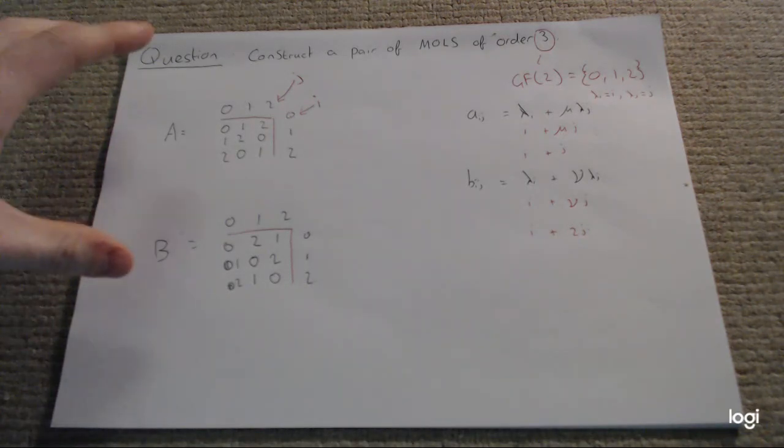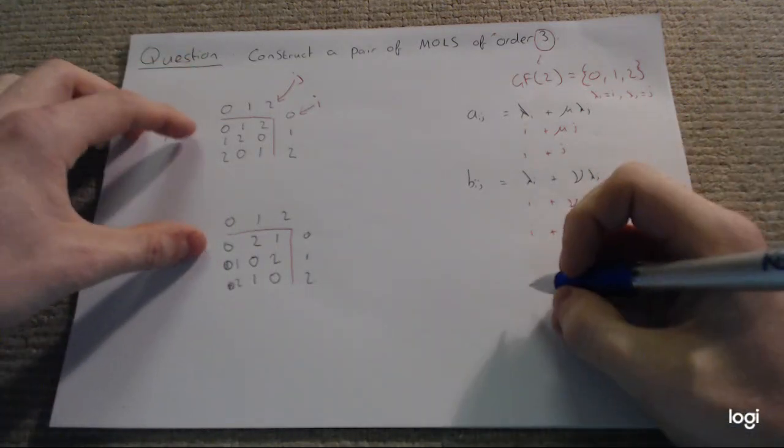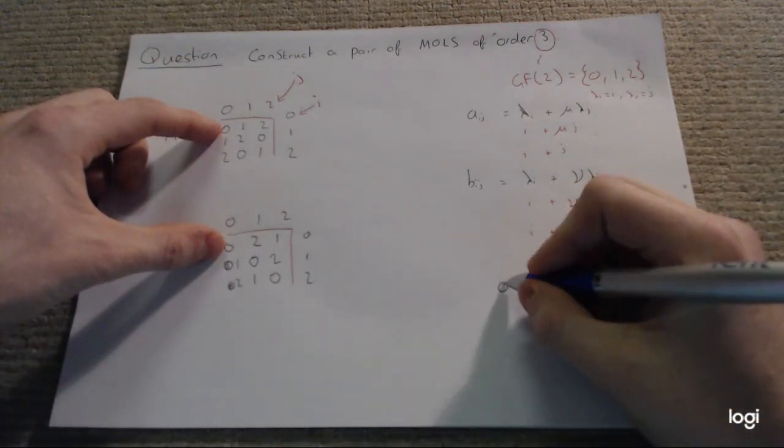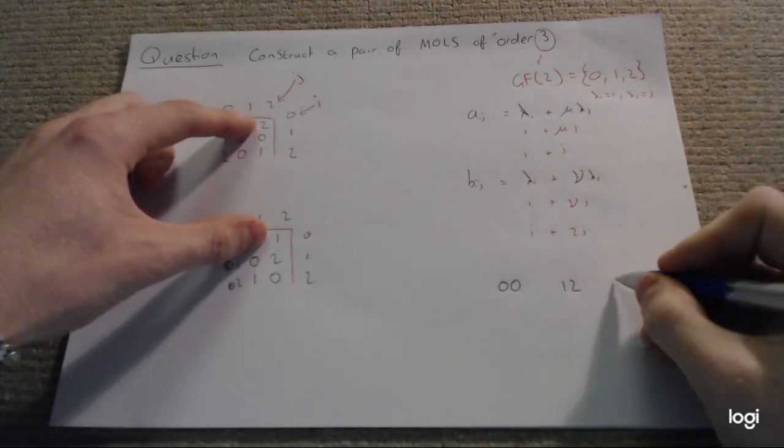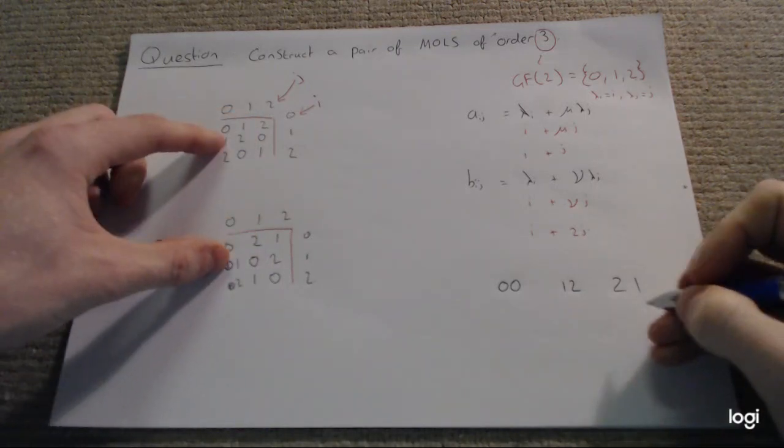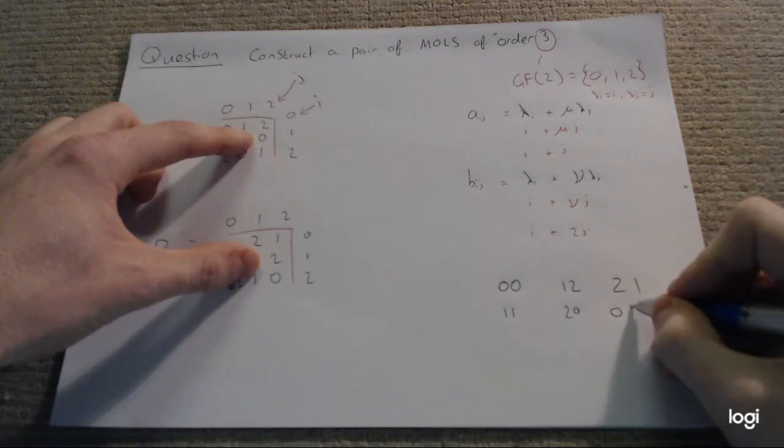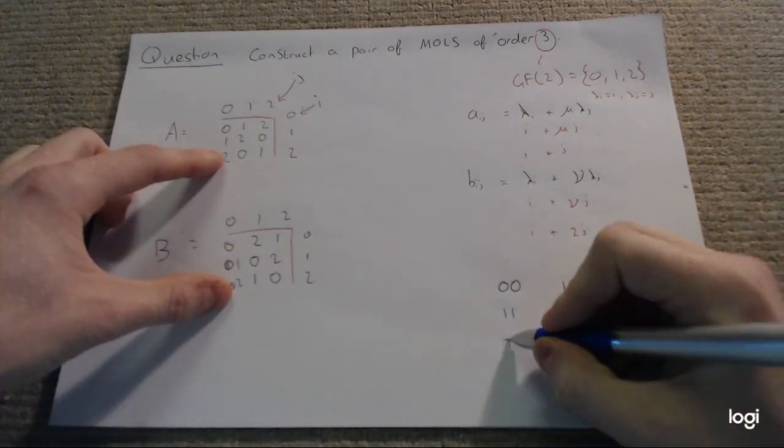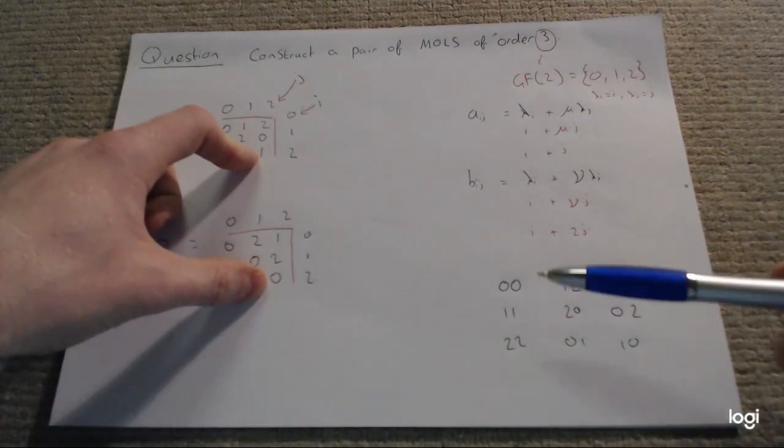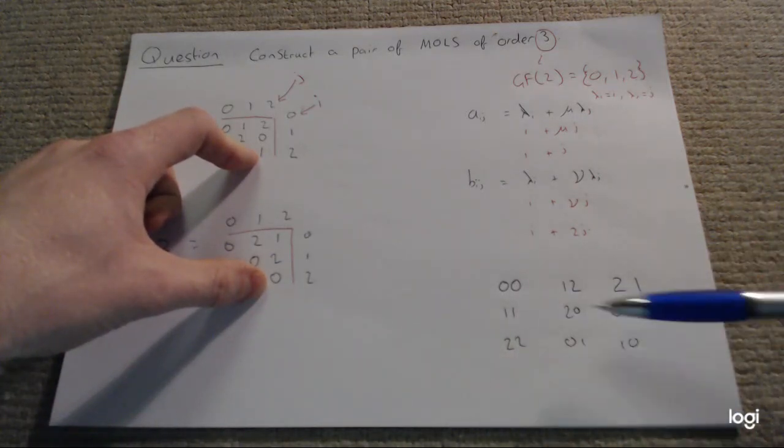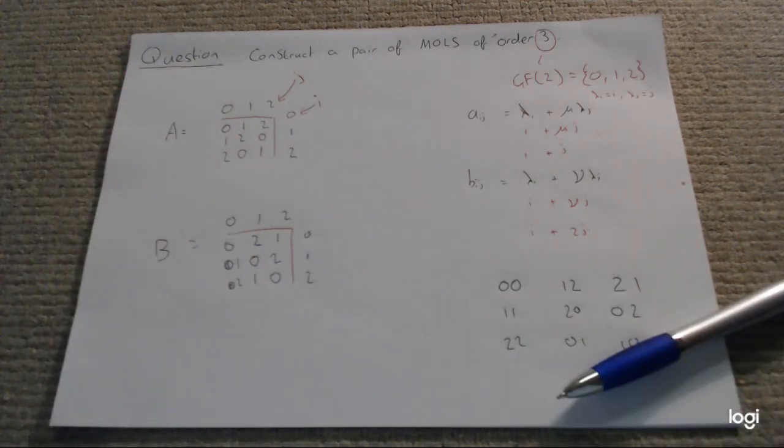Just to show that they are mutually orthogonal, we can superimpose these on top of each other. I'm going to get two 0s which I'll just call 0,0. Then 1,2. Then 2,1. Then 1,1. Then 2,0. And 0,2. Then 2,2. Then 0,1. And 1,0. And you can go ahead and check that each pair of numbers there only appears once. Therefore, they are mutually orthogonal.